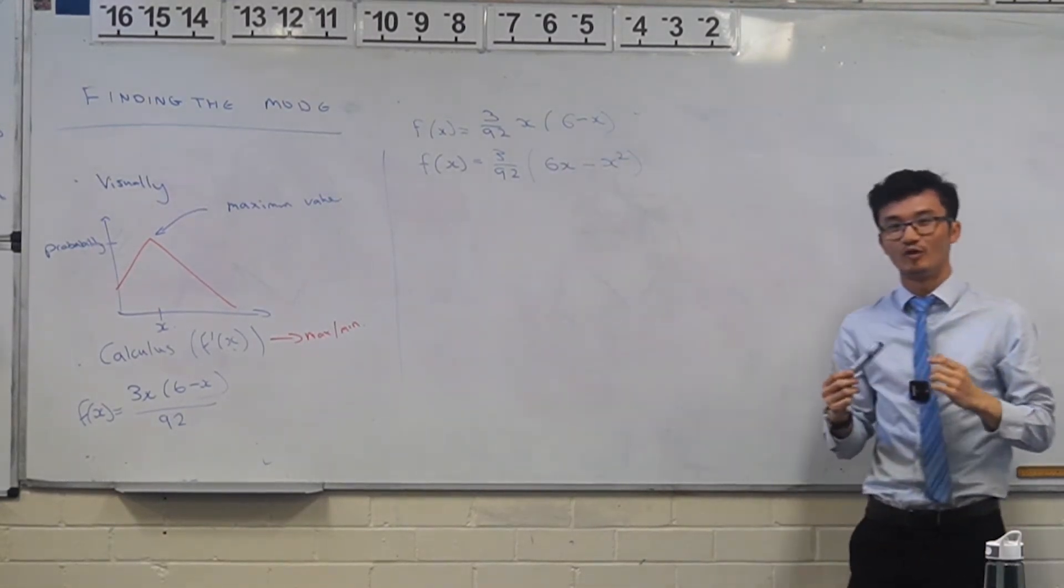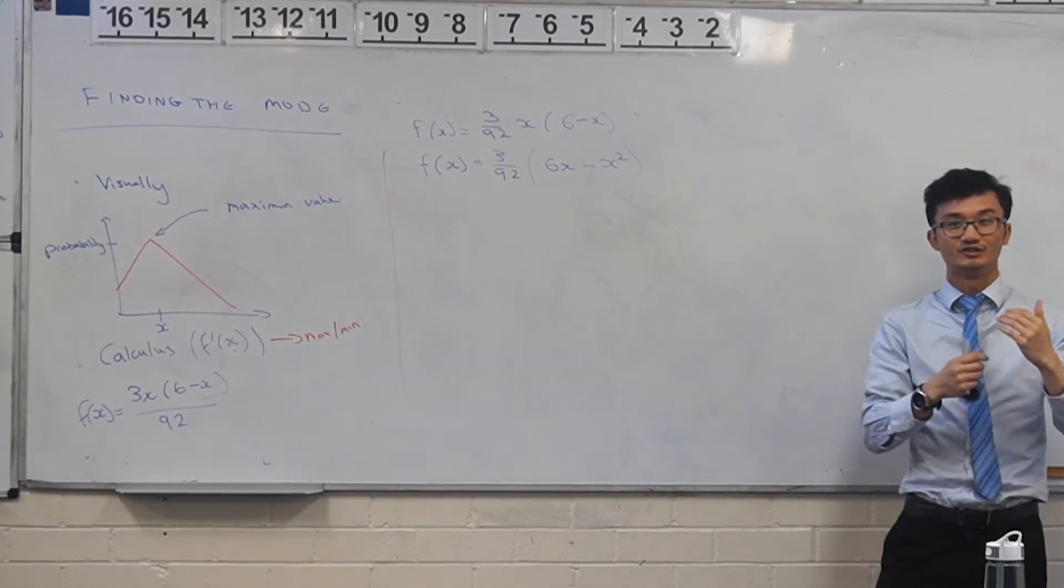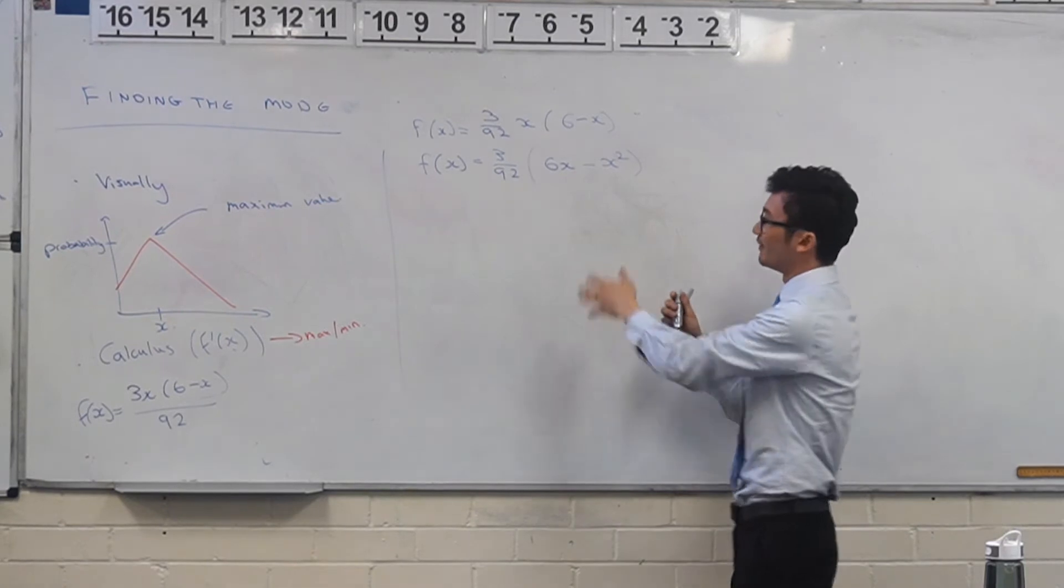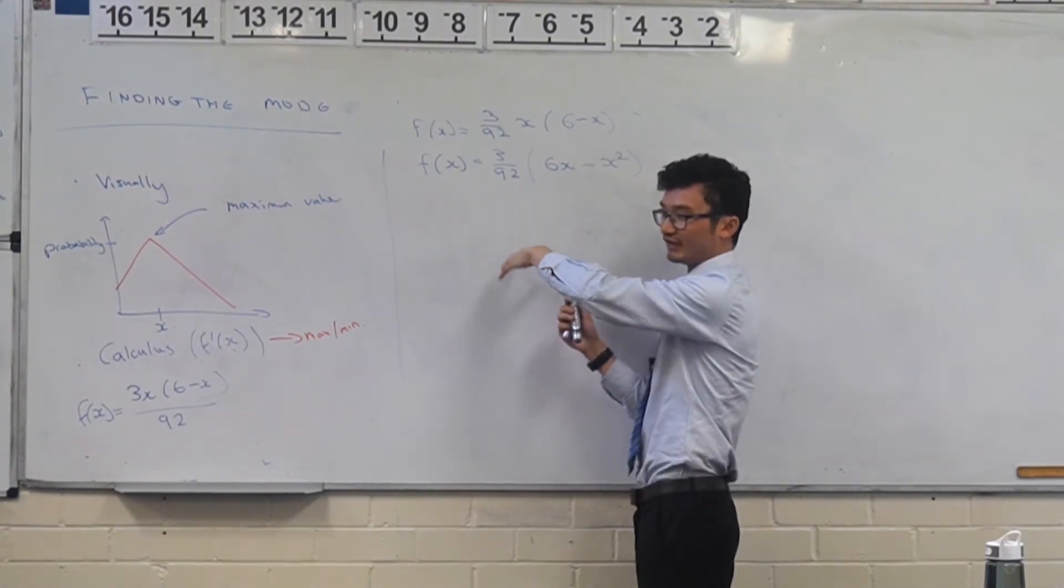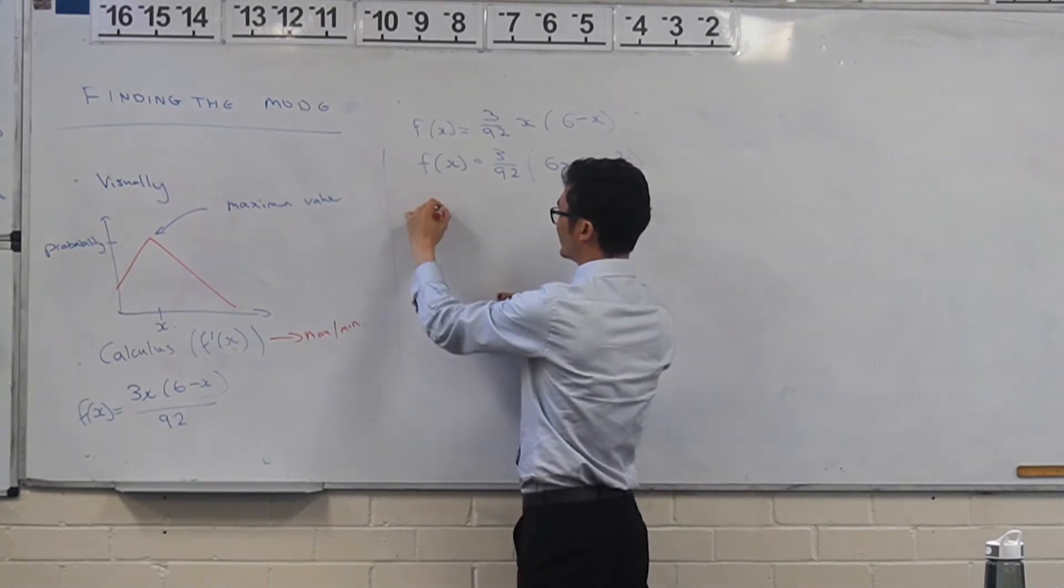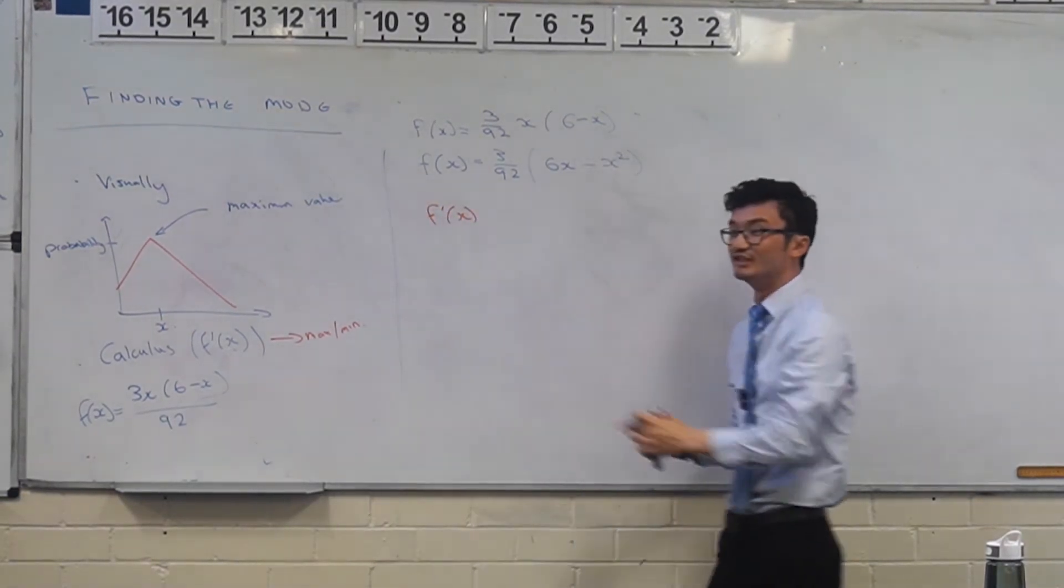And this over here, if you expand this out, what does that become? 6x minus x squared. So can you see now what you might want to do instead of having to use product rule or quotient rule? You can expand it and differentiate separately. What I'm going to do - I'm going to still leave the 3/92 there because I don't really want to deal with that.